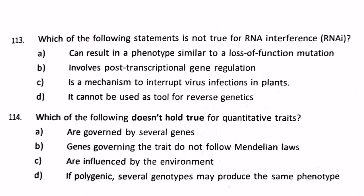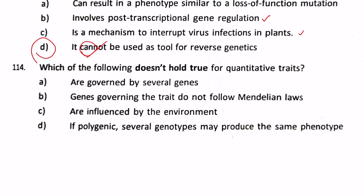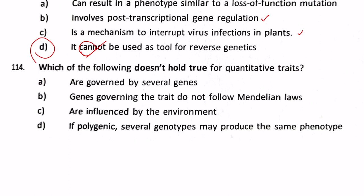Question one: which of the following statements is not true for RNA interference? Option A — it can result in a phenotype similar to a loss of function mutation — is true. Option B — it involves post-transcriptional gene regulation — is true. Option C — it is a mechanism to interrupt virus infection in plants — is also true. Option D — it cannot be used as a tool for reverse genetics — is not true, because it can be used for reverse genetics. So answer D is correct.